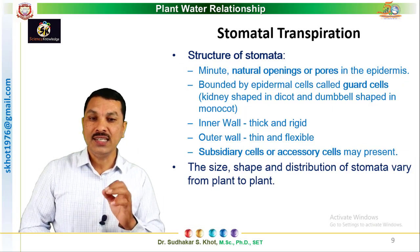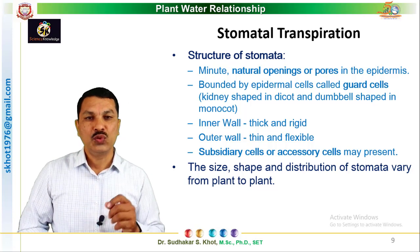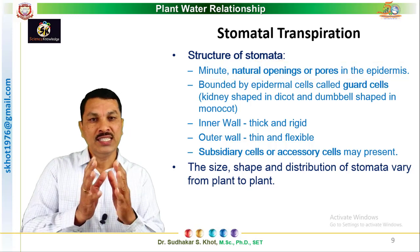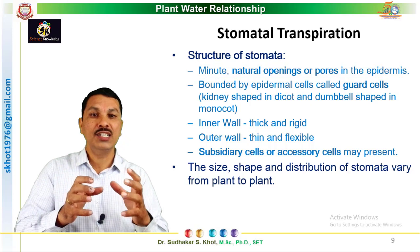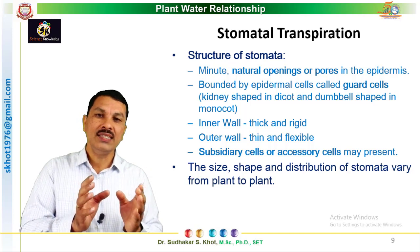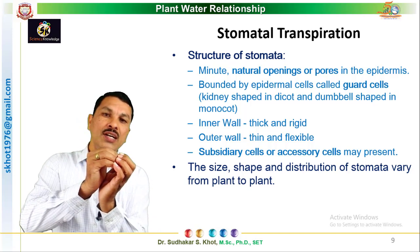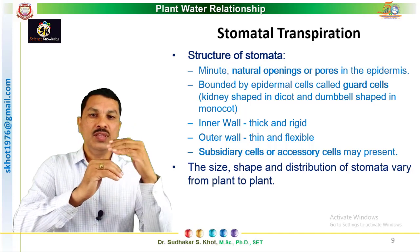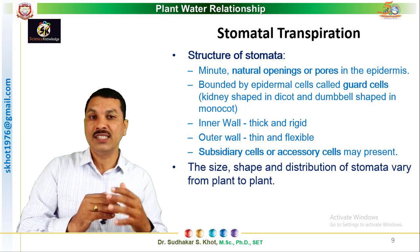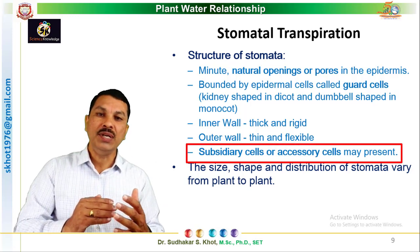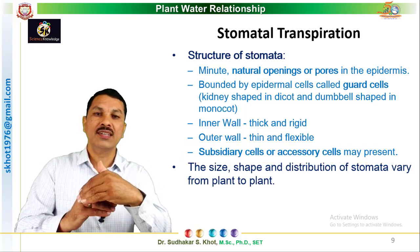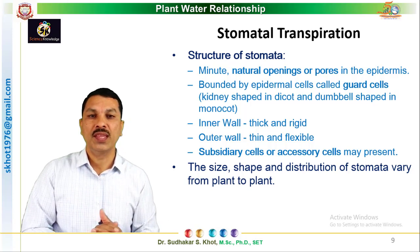Now let us see the structure of stomata. Stomata are minute natural openings present on the epidermis. These pores are protected by specialized epidermal cells called guard cells. Guard cells are present just surrounding the natural pore — the stomata. Guard cells are in turn surrounded by specialized cells called subsidiary cells or accessory cells, or sometimes these subsidiary cells may be absent, with guard cells directly surrounded by epidermal tissue.